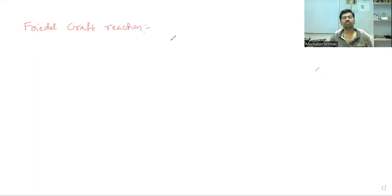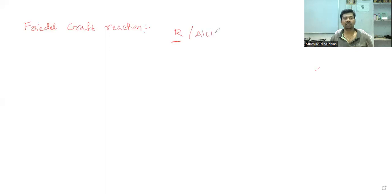What is Friedel-Crafts reaction? Generally, it is the substitution of an alkyl group on a benzene ring — this is called Friedel-Crafts reaction. This substitution of any alkyl group is carried out in the presence of a Lewis acid like AlCl3, FeCl3, or ZnCl2. When these Lewis acids are present, the alkyl group is substituted onto the benzene ring.